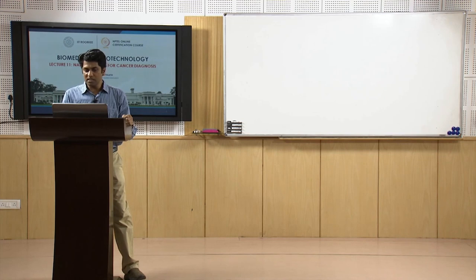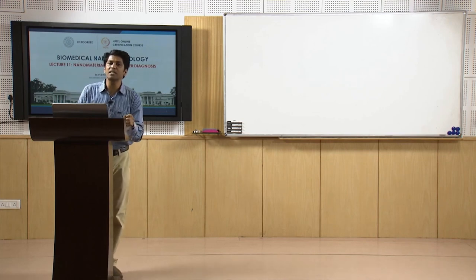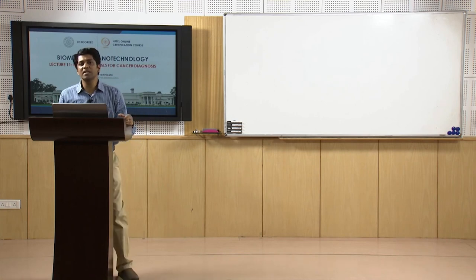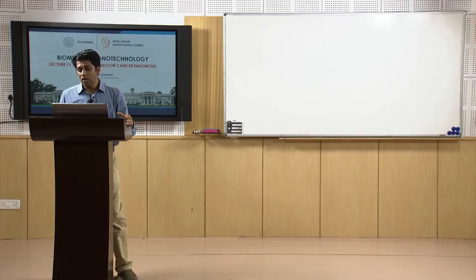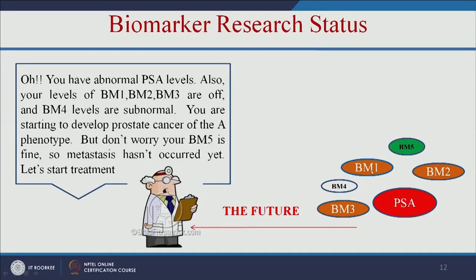This is called personalized medicine. Instead of giving generalized medicine for all marker types, if marker 1 is overexpressed, we can give a drug only to suppress marker 1, instead of drugs for all various markers. That will enhance the therapeutic efficiency.